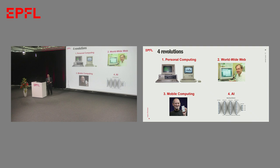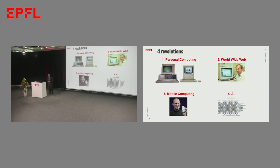The first revolution at the beginning was personal computing. Before that, we had big shared mainframe computers that were hard to use, and then we moved to desktop computers — the PC and the Macintosh. The next was the World Wide Web, which came from just down the road here. Then mobile computing, which took the computer from the desk and put it in your pocket. And finally, the one we've just started a couple of years ago, which is AI, where we don't really know where it's going to end up, but it's clearly the next revolution, going to change things as dramatically as the previous three.